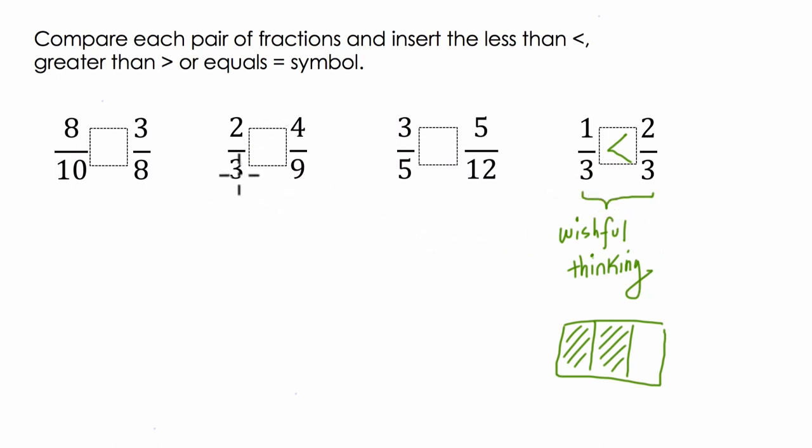Now let's skip over to this problem. So the wishful thinking strategy is thinking, wow, I really wish these two denominators were the same. I can also do the same with the numerators, but I'll just show the denominators here. So I could reduce four-ninths, or I could scale up two-thirds.